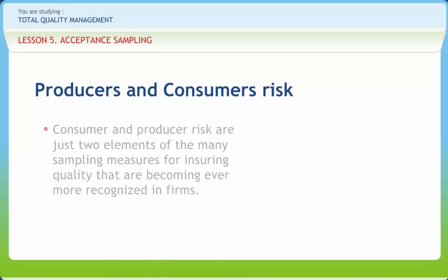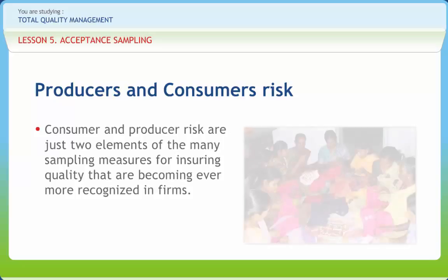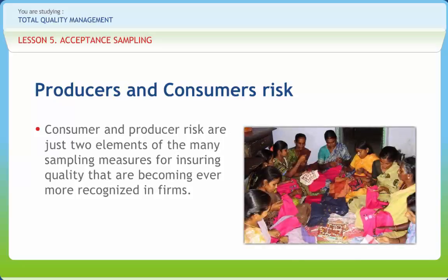Consumer and producer risk are just two elements of the many sampling measures for ensuring quality that are becoming even more recognized in firms.